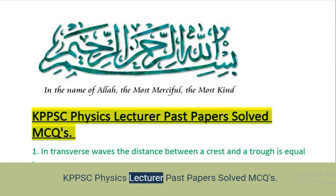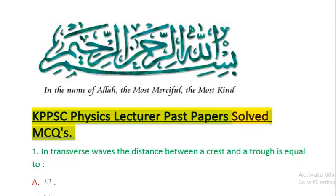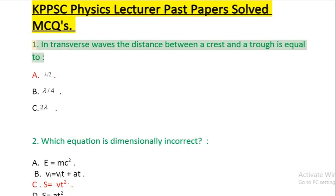KPPSC Physics Lecturer Past Papers Solved MCQs. Question 1: In transverse waves the distance between a crest and a trough is equal to: A, B, C.